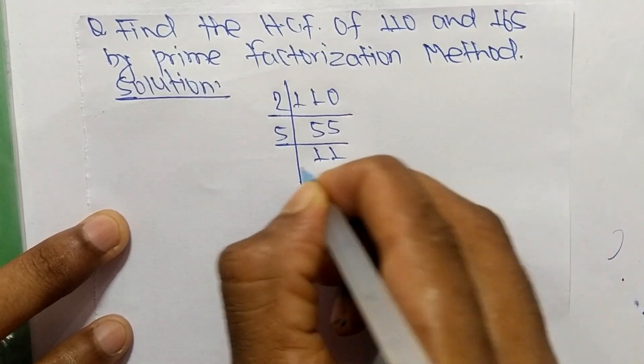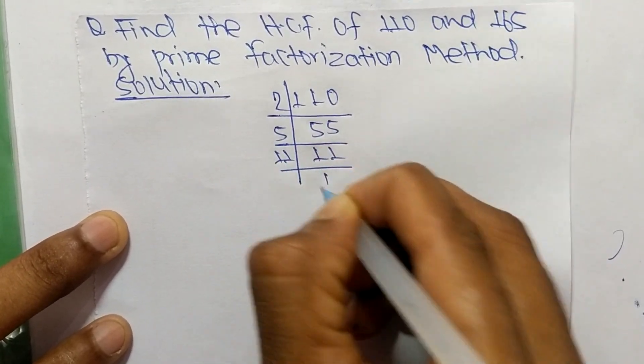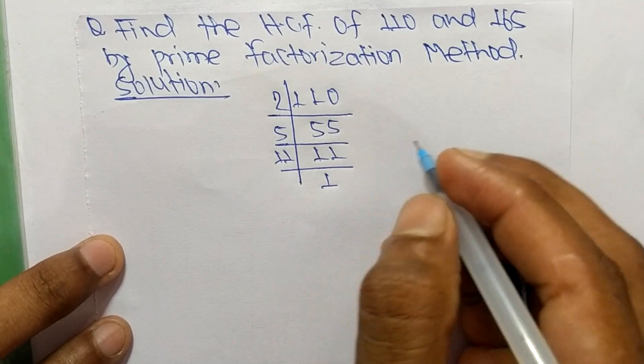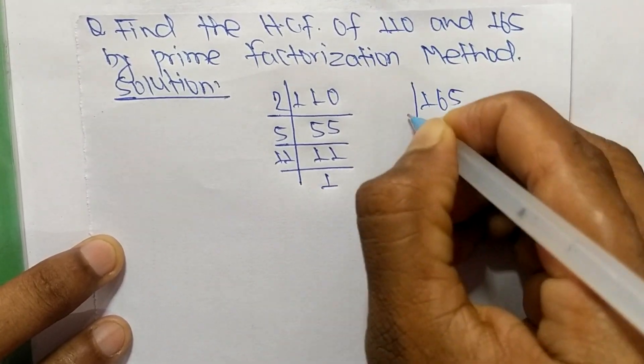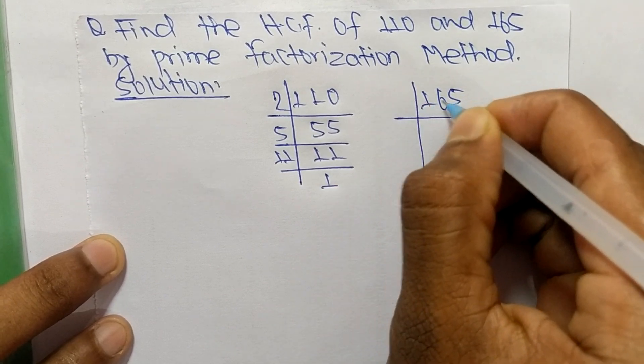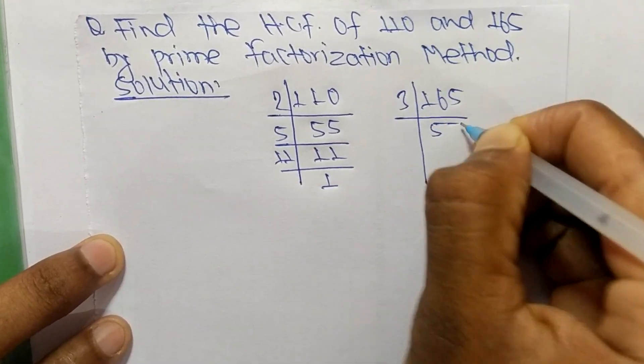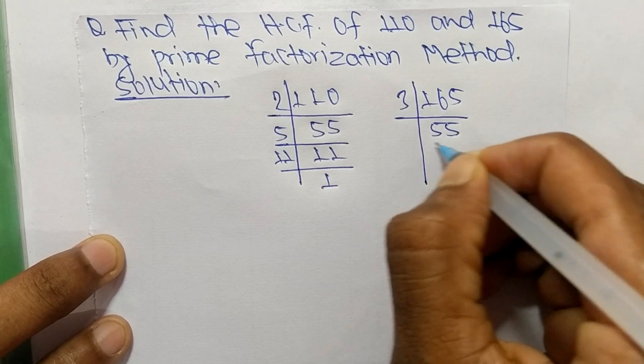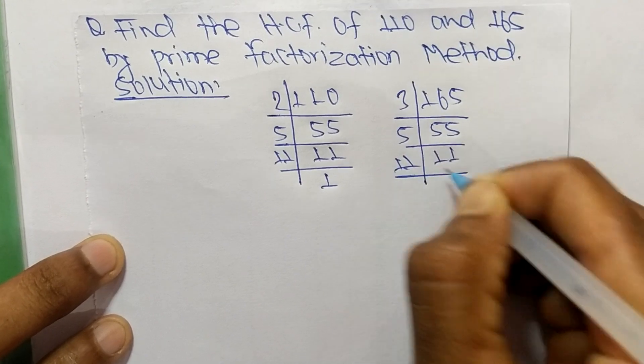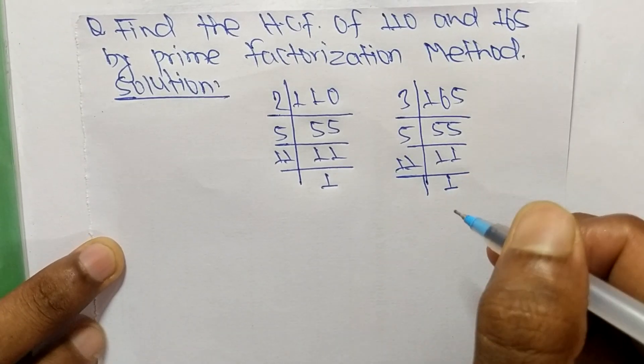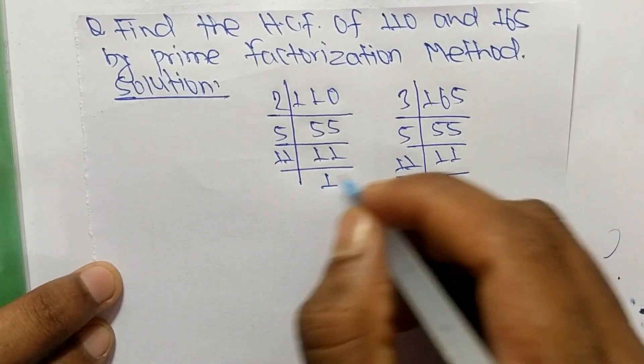5 times 11 equals 55, and 11 times 1 equals 11. The prime factors of 165 are 3 times 55 equals 165, then 5 times 11 equals 55, and 11 times 1 equals 11.